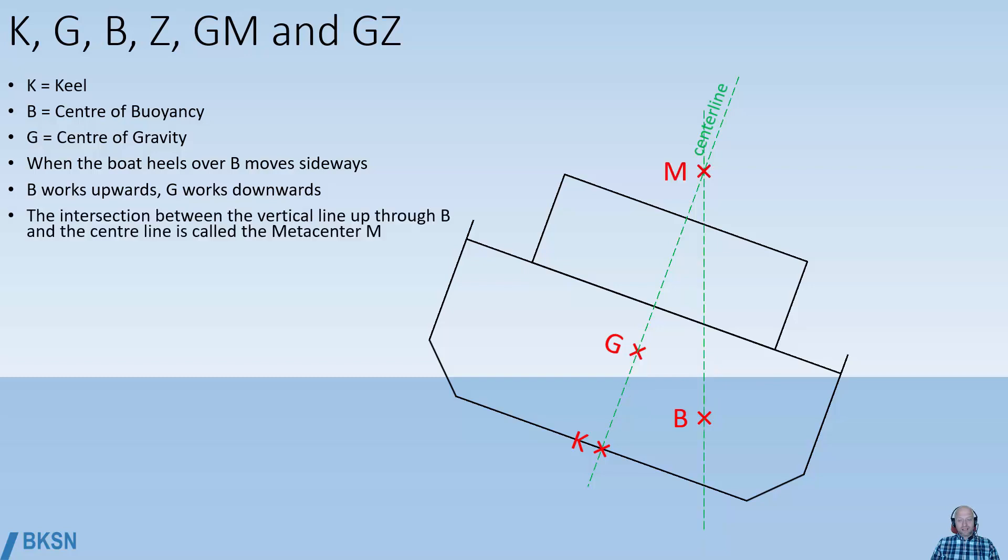The intersection between the vertical line up through B, the center of buoyancy, and the center line of the vessel, this intersection is called the metacenter, abbreviated M.